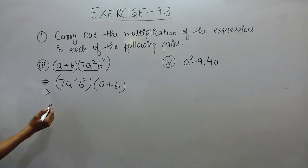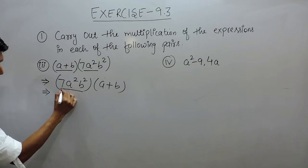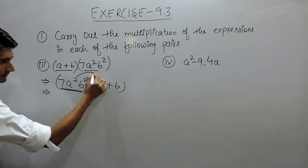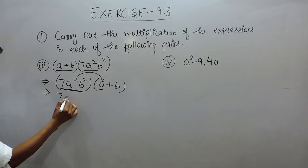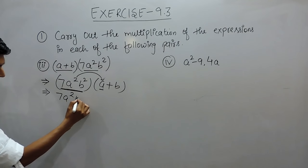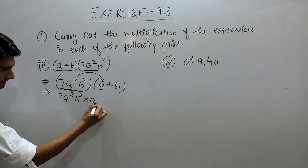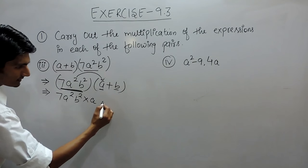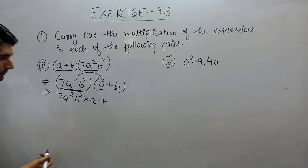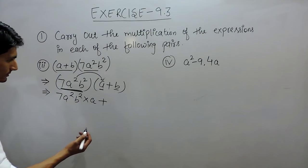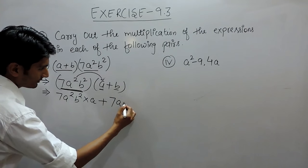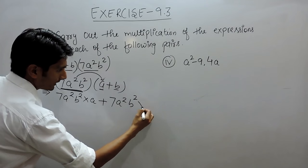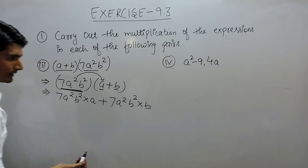In this case, when this monomial, or you can say this term, is multiplied by this, it can be written as this much. And again, when this is multiplied by this, there will be a positive sign between these two terms. This will be 7a²b² multiplied by b.